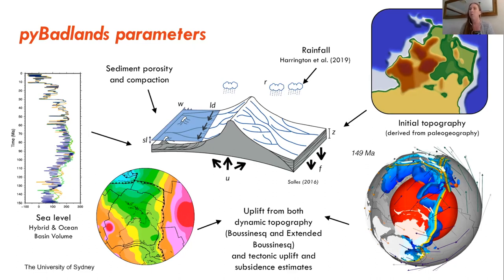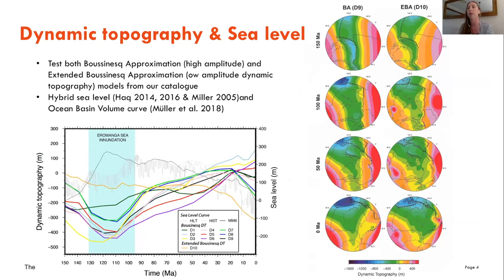With the models that we've been doing recently, incorporating dynamic topography, we've really been looking at the difference in the Boussinesq approximation models and the extended Boussinesq approximations. In our initial testing we found that almost no matter what we did, the Boussinesq approximations had such a high amplitude wave of dynamic topography that we were always getting almost too much flooding, and particularly at the present day as Australia continued to move eastward, our final time step would often have Western Australia just totally submerged.